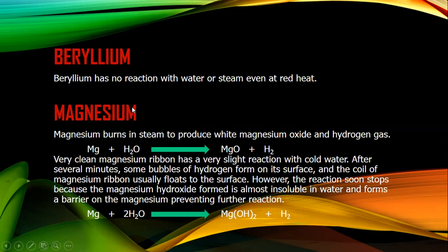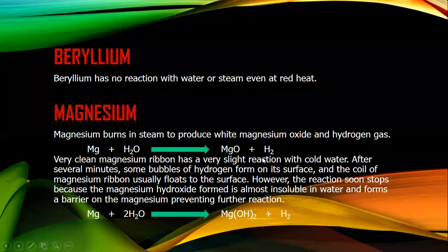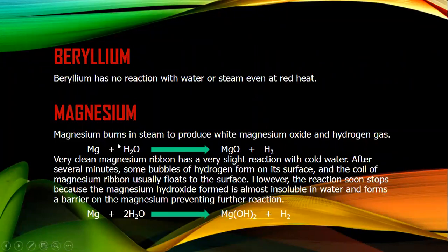Next is magnesium. Magnesium reacts with steam to give magnesium oxide and hydrogen gas. Magnesium also reacts with cold water, but its behavior is slightly different, producing magnesium hydroxide and hydrogen gas.